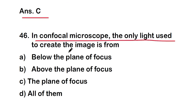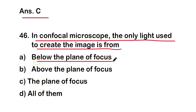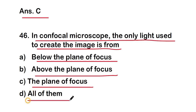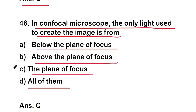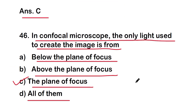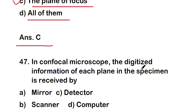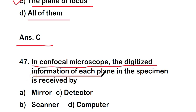The major component of the confocal microscope is the aperture. Next question: in a confocal microscope, the only light used to create the image is from — below the plane of focus, above the plane of focus, the plane of focus, or all of them? The right answer is option C — the plane of focus.